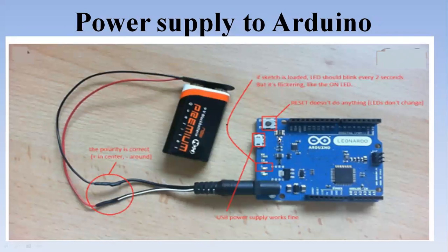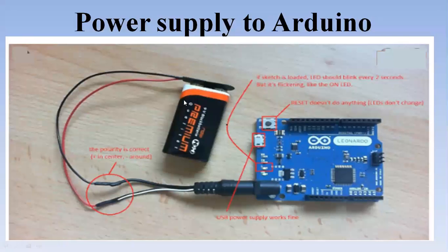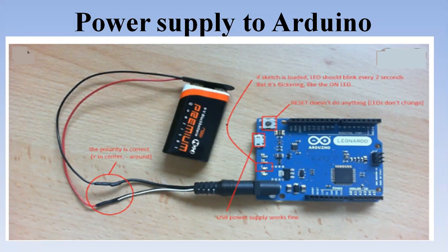Now I want to show you how to use the power supply port of the Arduino. We can use this port on the Arduino board for giving DC power supply. We connect this Arduino board for DC power supply using a battery — we make a connection and connect this port to the DC power through a battery source if we want to use the Arduino board with a separate power supply.